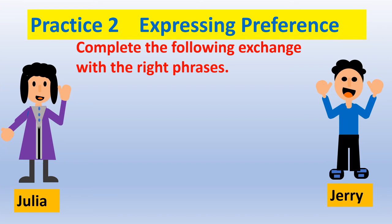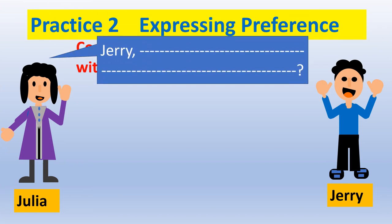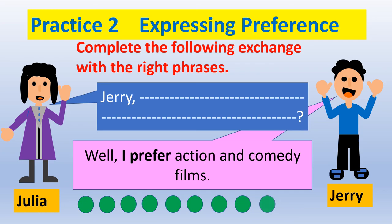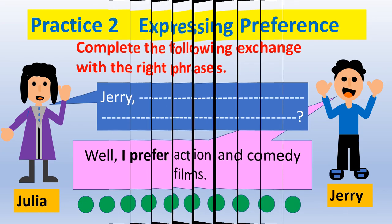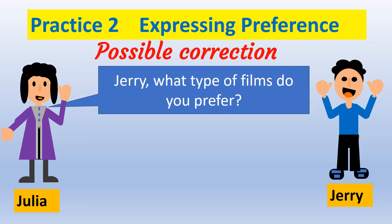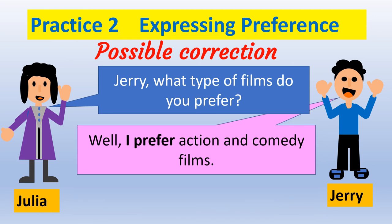Complete the following exchange with the right phrases. Possible correction — Listen and practice: A: Jerry, what type of films do you prefer? B: Well, I prefer action and comedy films.